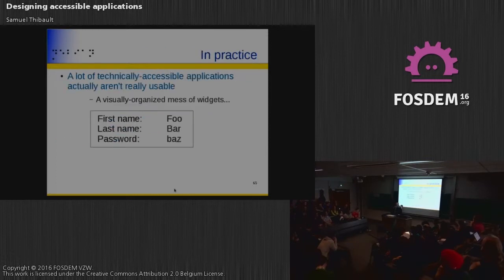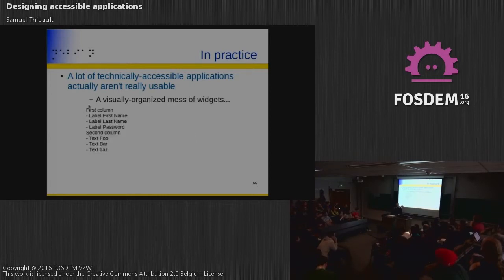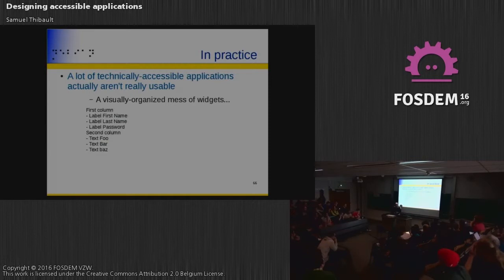All applications which render their output directly — like xpdf — are not accessible at all. In practice, it's not just because you have your application in GTK that it is accessible. For instance, if you have a dialog box with first name and last name fields but the labels and text fields are in separate columns, you don't know which label belongs to which field. It's really not usable even if technically it is accessible. You would do much better to use a label paired with a text field, making a relation between the label and the text, putting the semantic into your application.